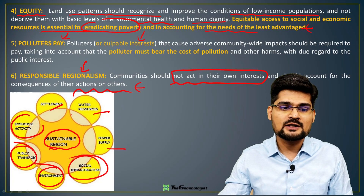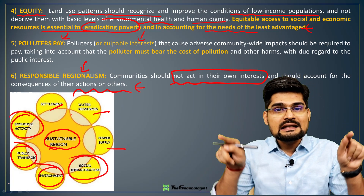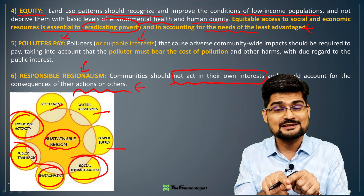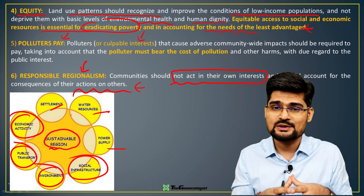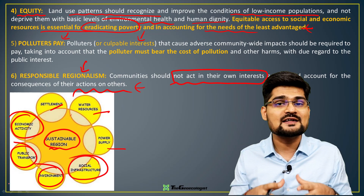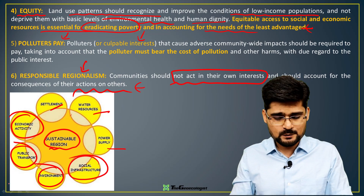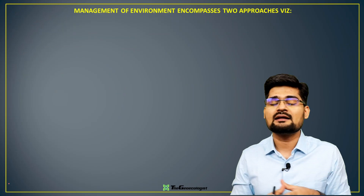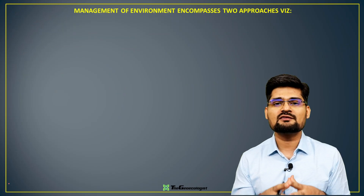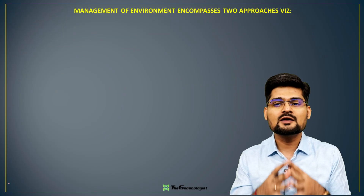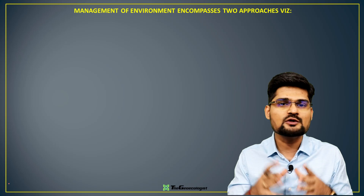In sustainable regional development, settlement, water resources, power supply, social infrastructure, environment, public transport, and economic activity are all integrated in the system. This is a systems approach to understanding sustainable development, and these are the basic principles underlying it.